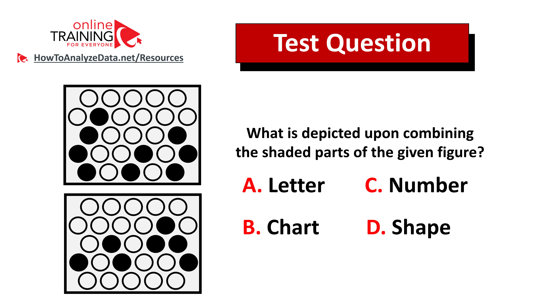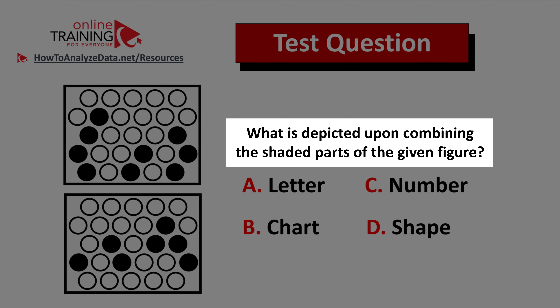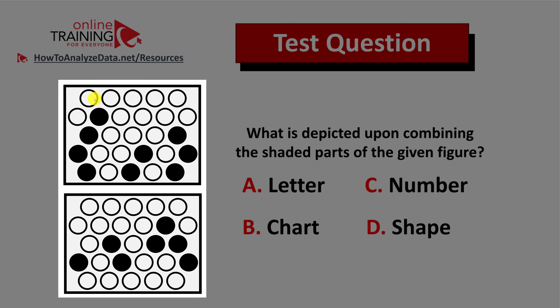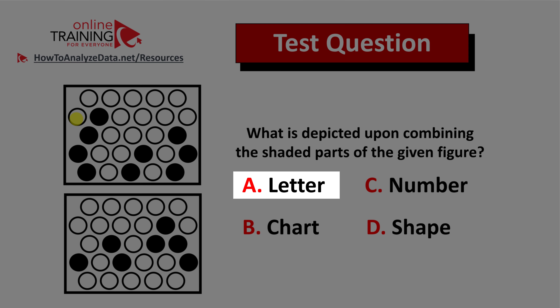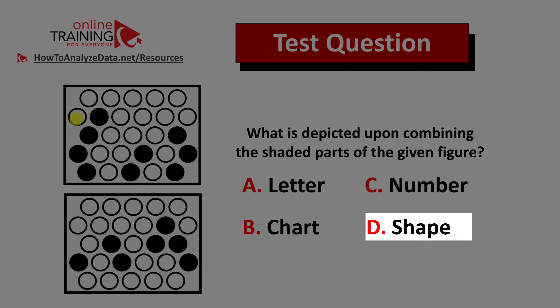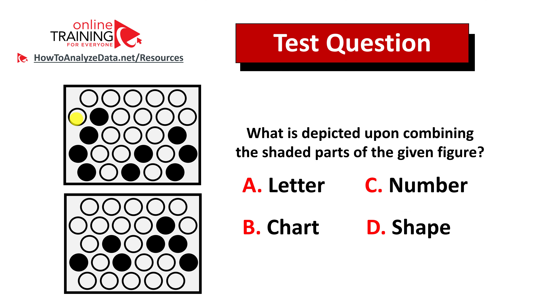Here's a tricky question from the real test. What is depicted upon combining the shaded parts of the given figure? You have two rectangles with circles inside presented on the left. Each rectangle contains different circles — some are white and some are filled with black. You have four possible choices: choice A letter, choice B chart, choice C number, and choice D shape. Can you visualize the answer? Give yourself five to ten seconds.